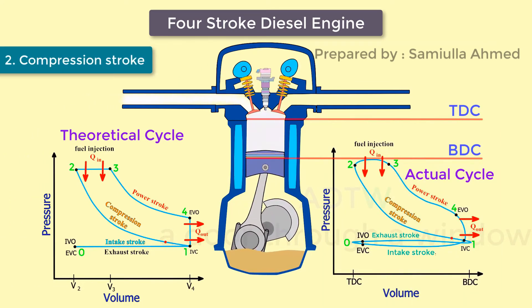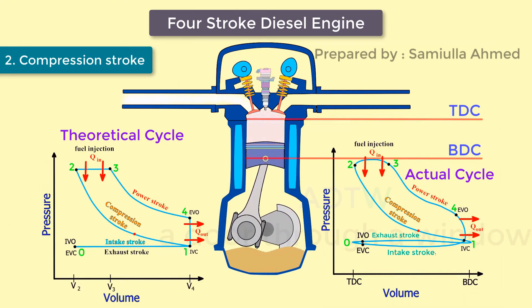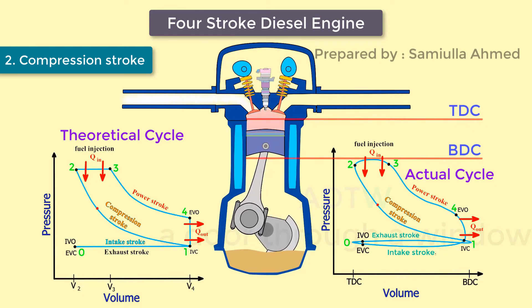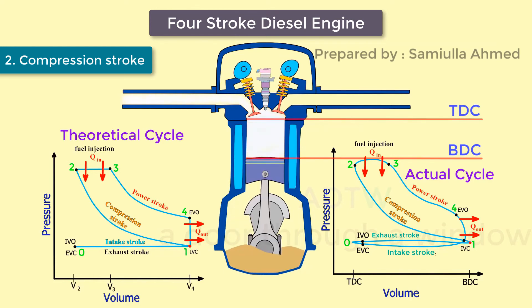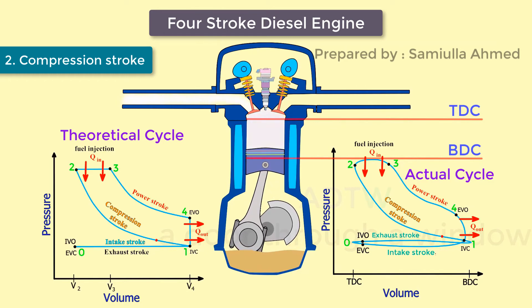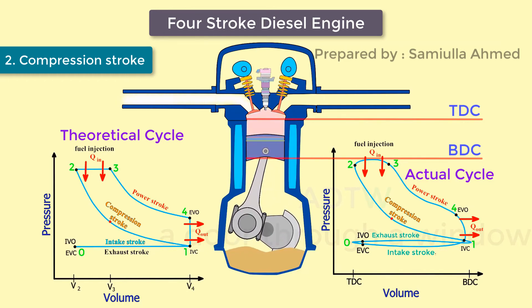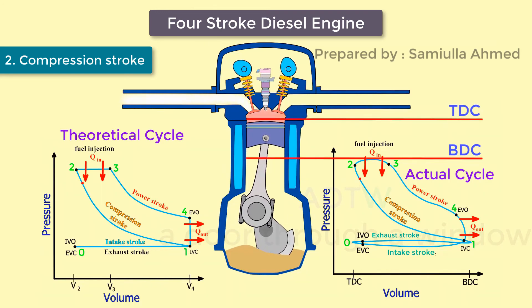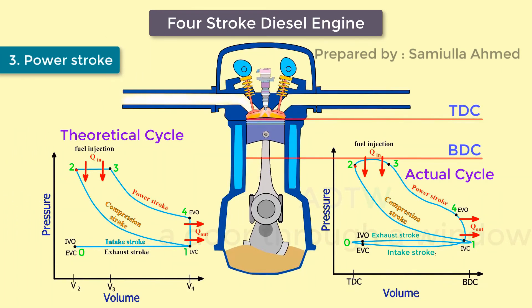In the compression stroke, the piston moves from bottom dead center to top dead center, and the cycle passes from point one to two. Both the intake and exhaust valves are closed, so the air is compressed. At the end of this stroke, the pressure and temperature in the chamber are increased, completing a full revolution of the crankshaft.